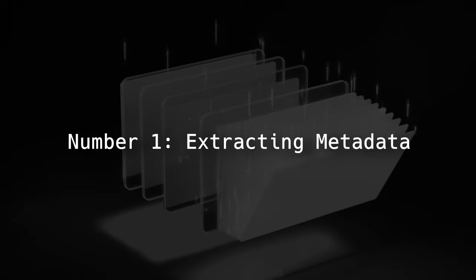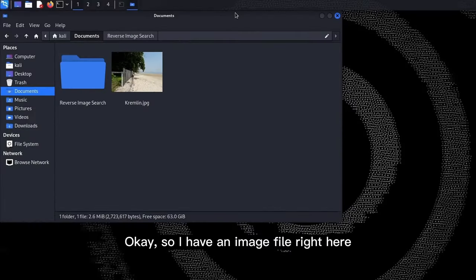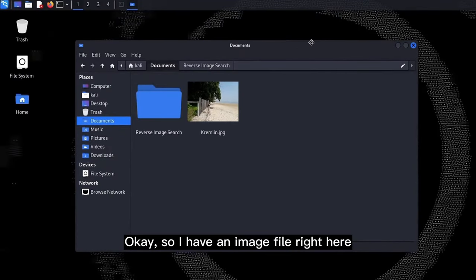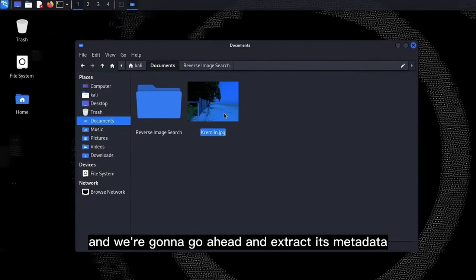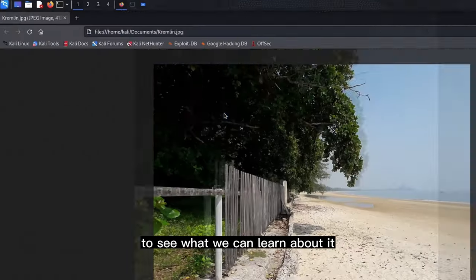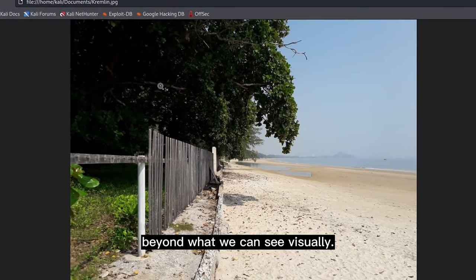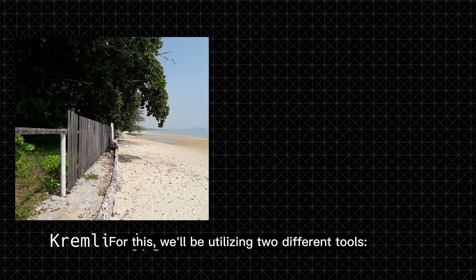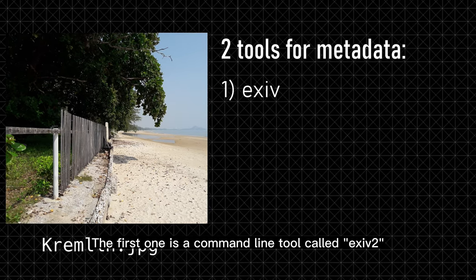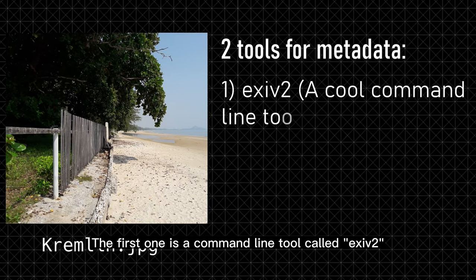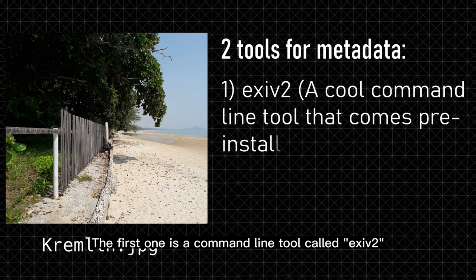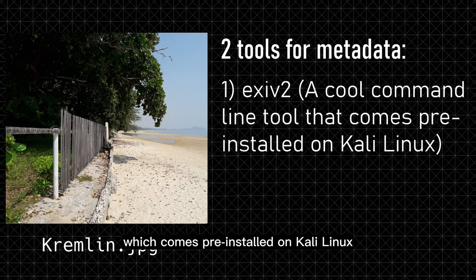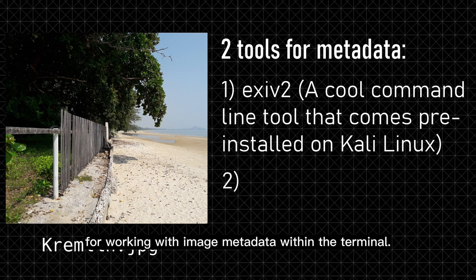Number 1: Extracting metadata. I have an image file right here in my documents folder, and we're going to go ahead and extract its metadata to see what we can learn about it beyond what we can see visually. For this, we'll be utilizing two different tools. The first one is a command line tool called EXIF2, which comes pre-installed on Kali Linux, and is a powerful utility for working with image metadata within the terminal.